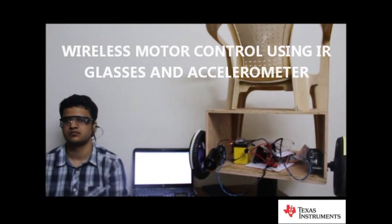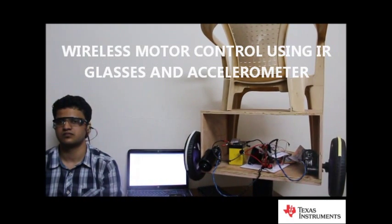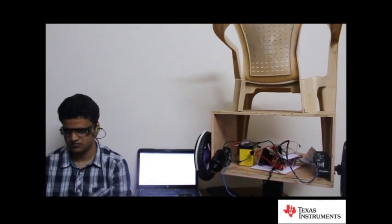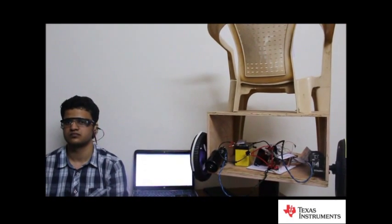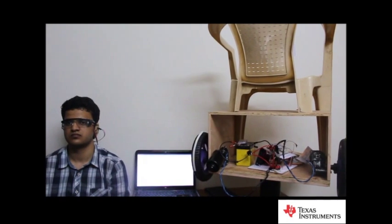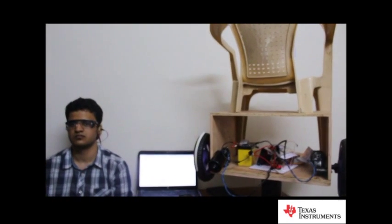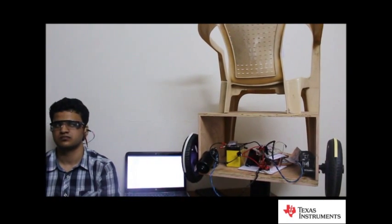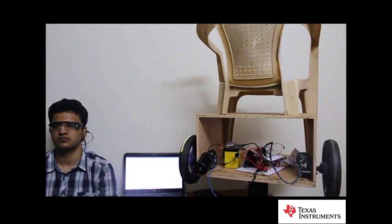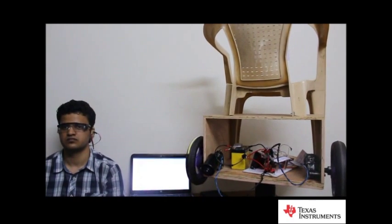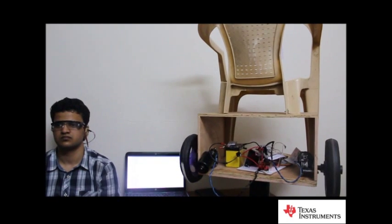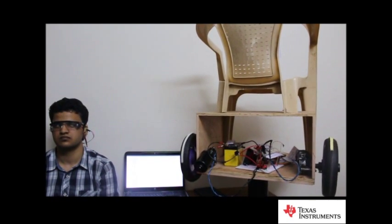Now we see the use of the IR glasses. It is used to move the wheelchair. When he tilts his head forward, the IR sensors will be calibrated. The IR sensor will track his eyeball and according to the motion, the wheelchair will move wirelessly. We can see that he is moving his eyeball and the tires are moving accordingly.